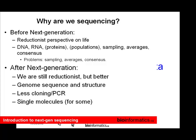You were able to do sampling averages and consensus, which led to a lot of information. But of course that also led to problems, because sampling averages and consensus confused the information and our understanding of the biology that was there.